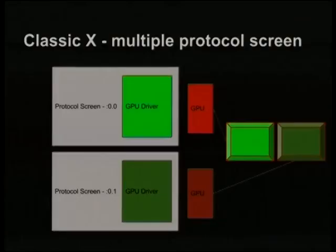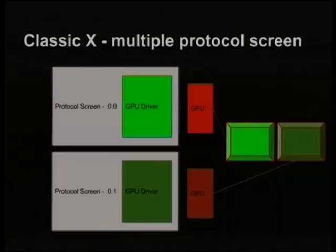The next thing was multiple protocol screens — something people would still use today. You have two GPUs, and you've got two monitors, so you obviously need two graphics cards to drive them, and they're completely separate desktops. There's no window movement between them; they're running as two completely separate entities — probably FVWM or something. It works, but you couldn't move windows between them, and you had multiple graphics cards — one per monitor, kind of not scalable.